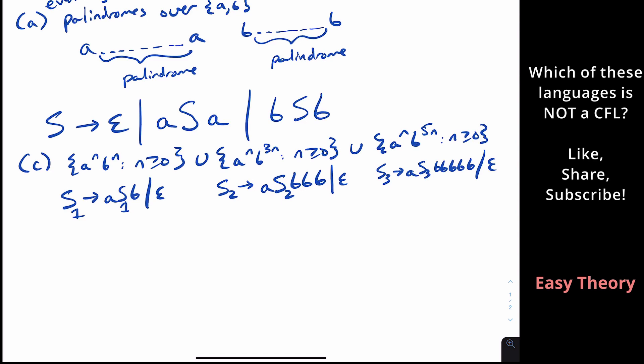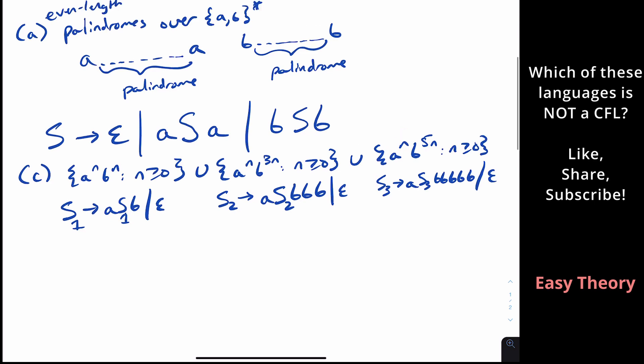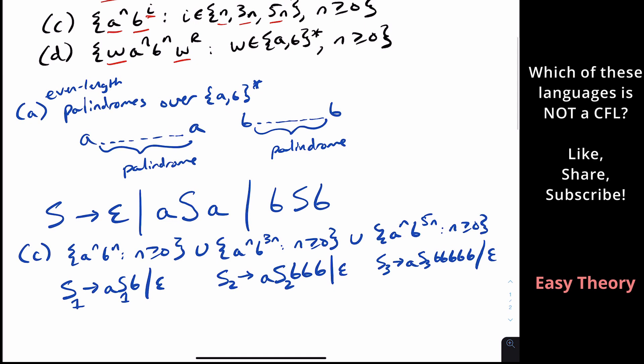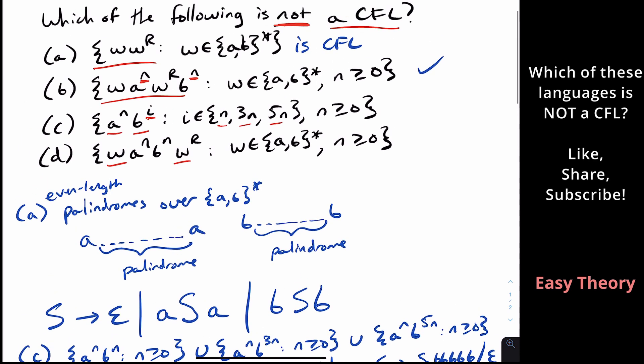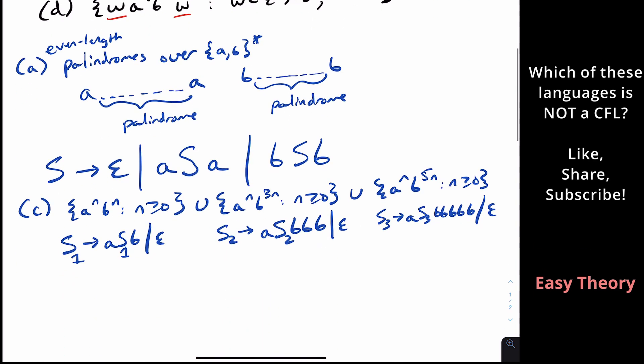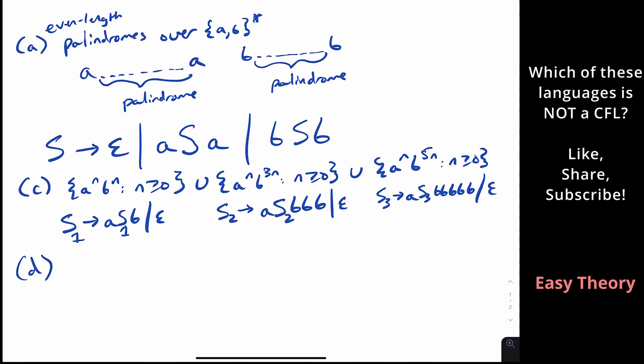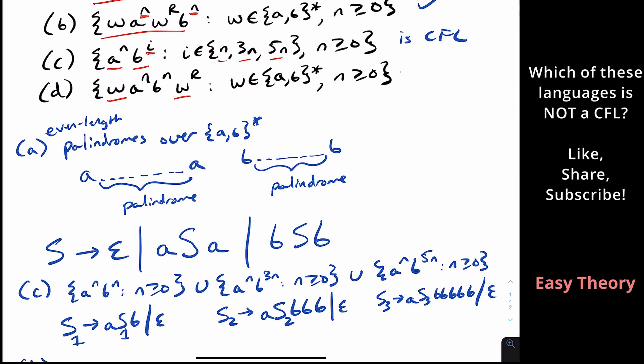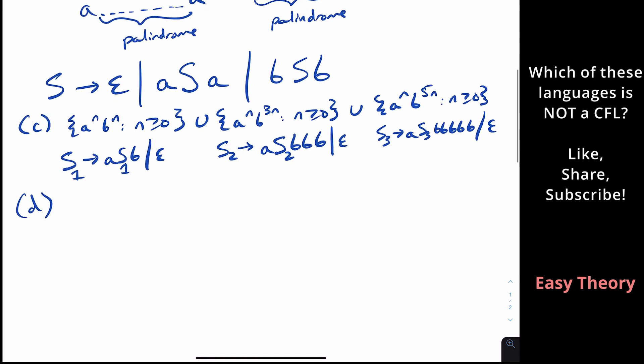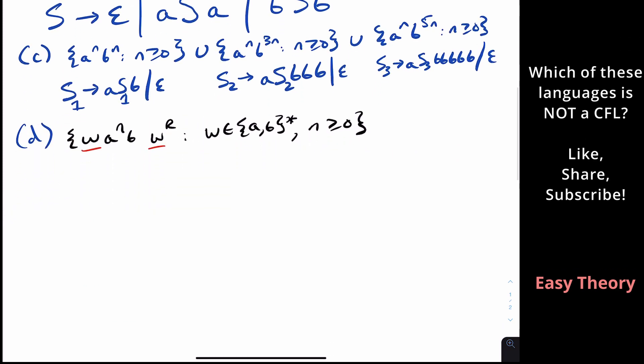So they're all context-free, because we just made a grammar for them. And context-free languages are closed under union, because we just made a video about that. So we can confidently say that C is a CFL. Now, what about D?